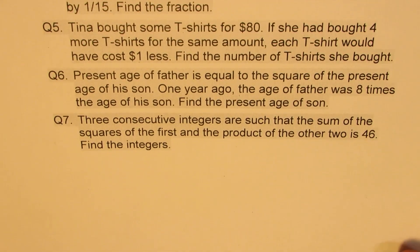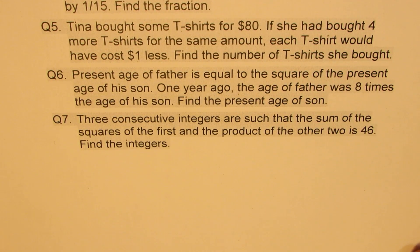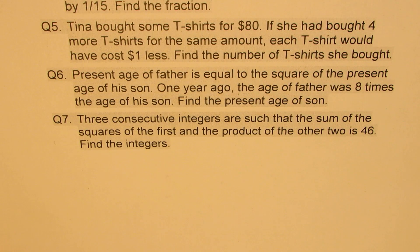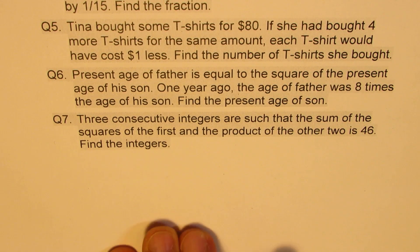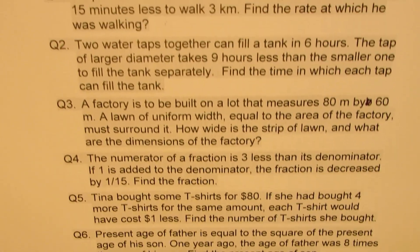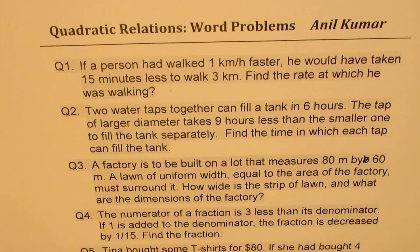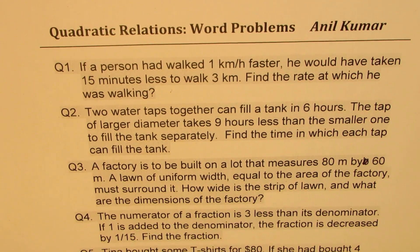Question number seven: Three consecutive integers are such that the sum of the squares of the first and the product of the other two is 46. Find the integers. I'd like you to pause the video, copy these questions, try them out, and then look into my suggestions. Now let's look into these solutions one by one.